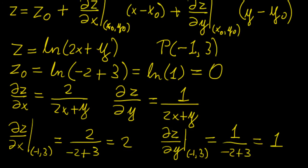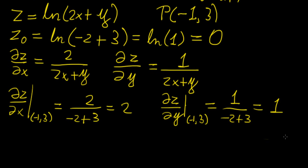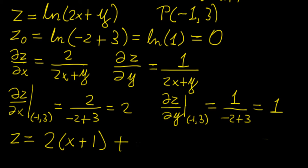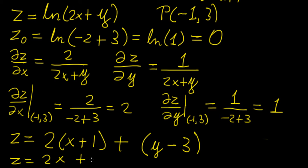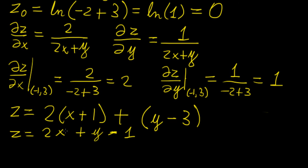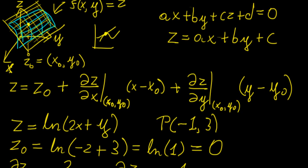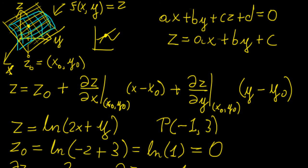Now all we do is plug in all these values into the equation, and that gives us the equation of the tangent plane. So z equals z0, which is 0, plus 2 times (x minus x0), so that's (x minus (-1)), which becomes (x plus 1), plus 1 times (y minus y0), which is (y minus 3). Expanding this out, we get z equals 2x plus y minus 1. So that's the equation for the tangent plane at that point.